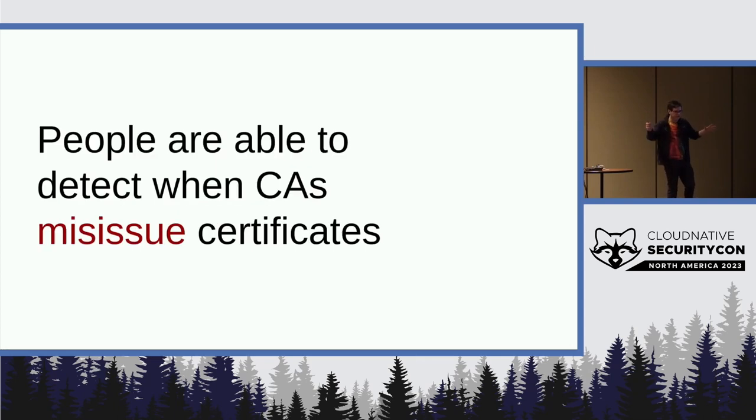So the rough analogy, and bear with me a little bit, is that with certificate transparency, people are able to detect when CAs misssue certificates, right? Whether it's accidentally or maliciously, you can tell that something was done incorrectly, that something was done wrong.